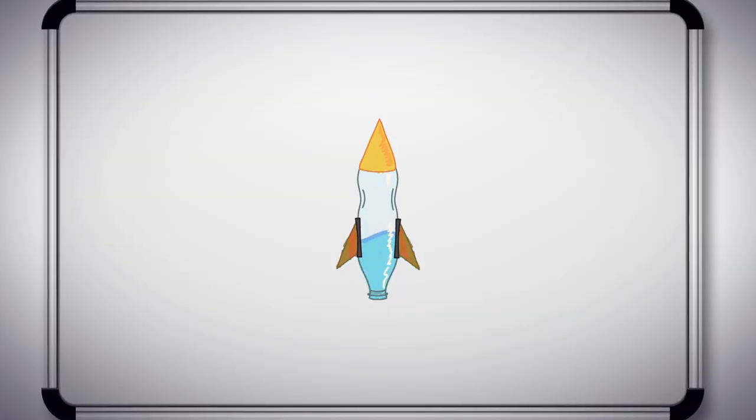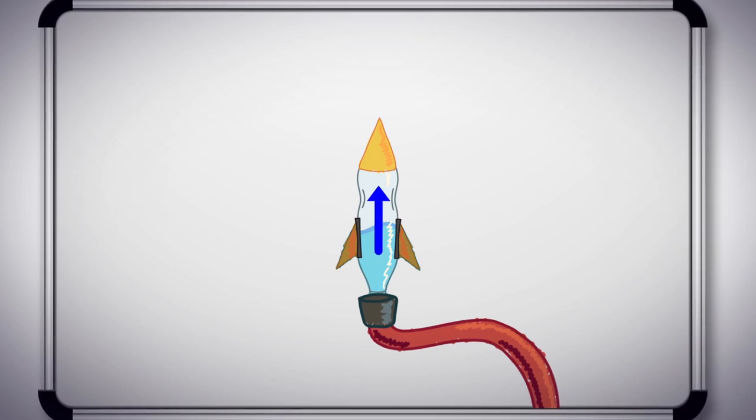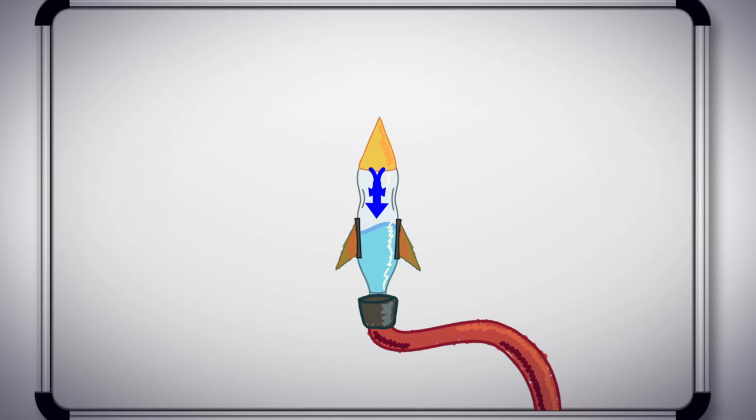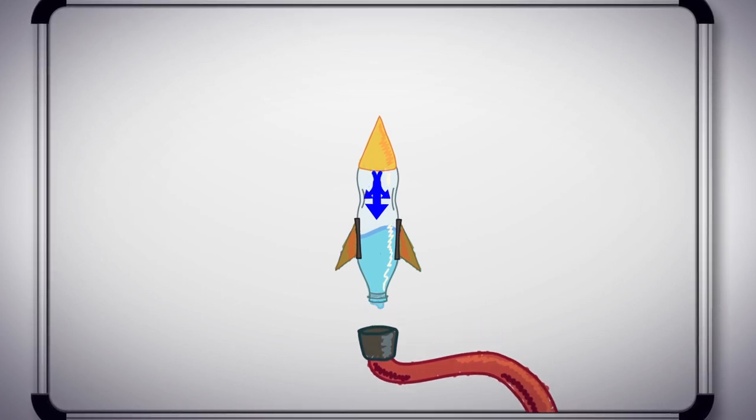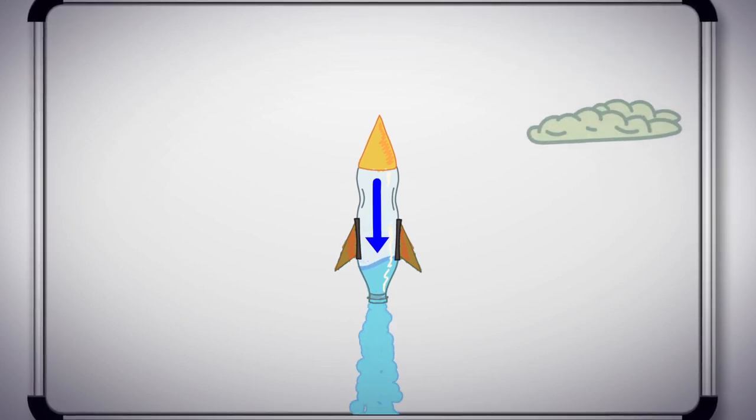First, we fill the bottle almost halfway with water, and then we add air to the bottle. The air pressure builds up, and the air presses down on the water. The rocket takes off when we pull on the release valve, which was blocking the opening of the bottle. Once that happens, the air pushes out the water.